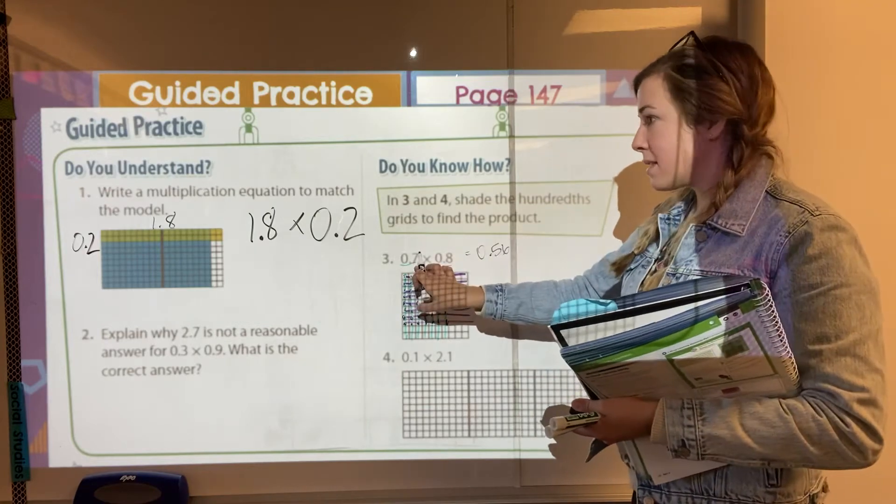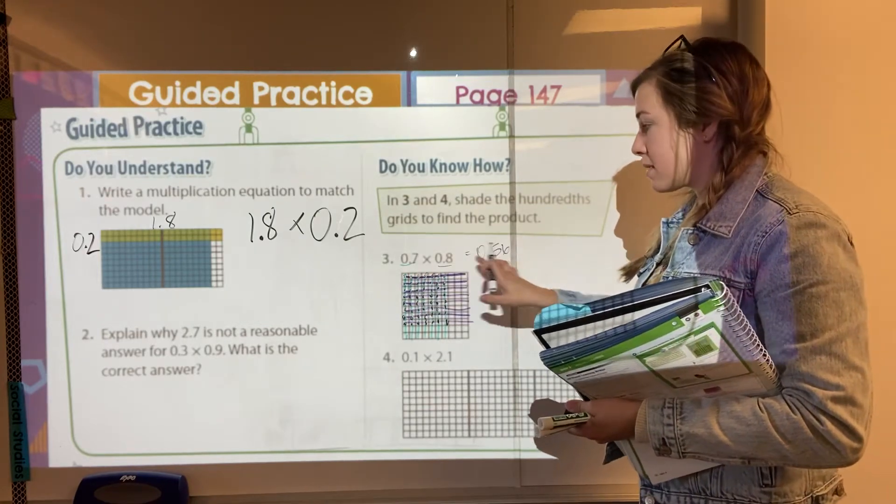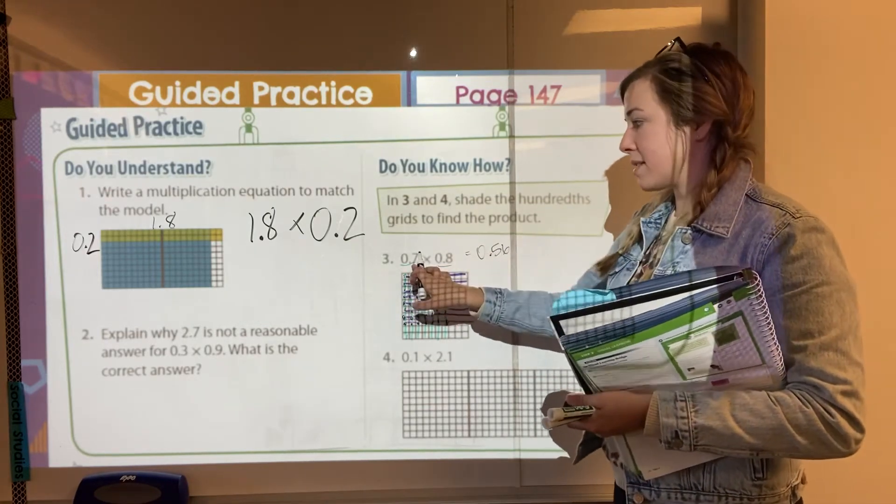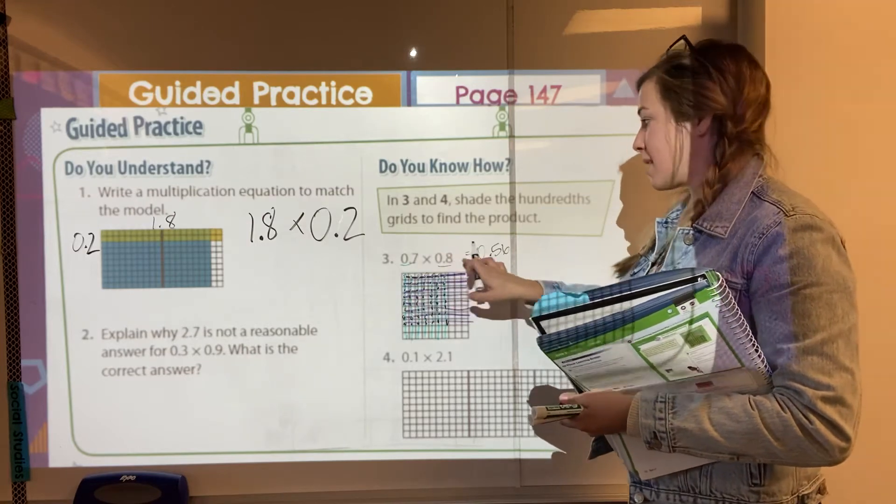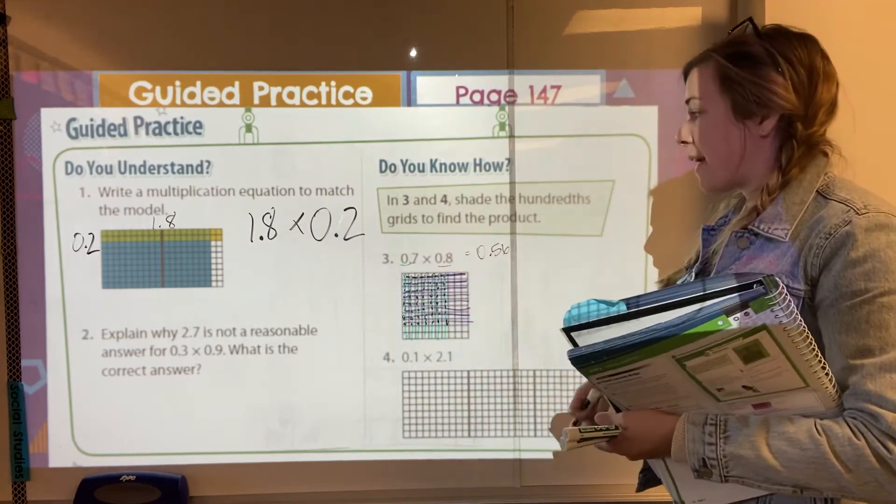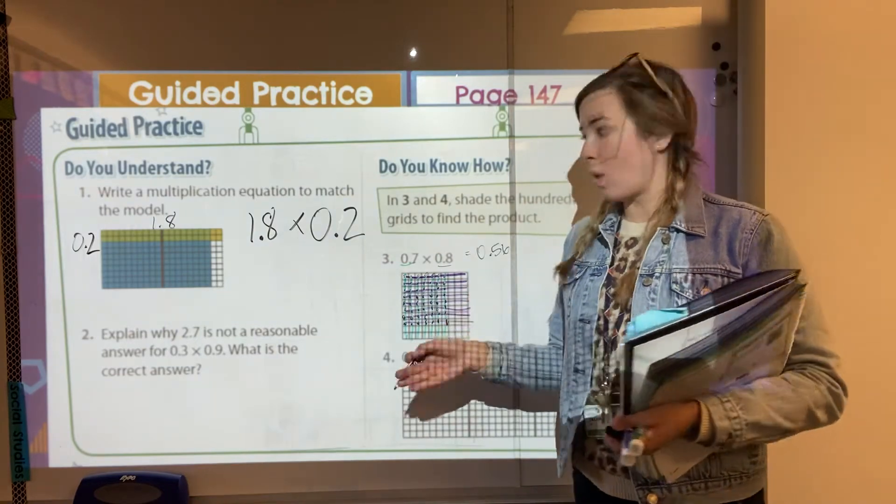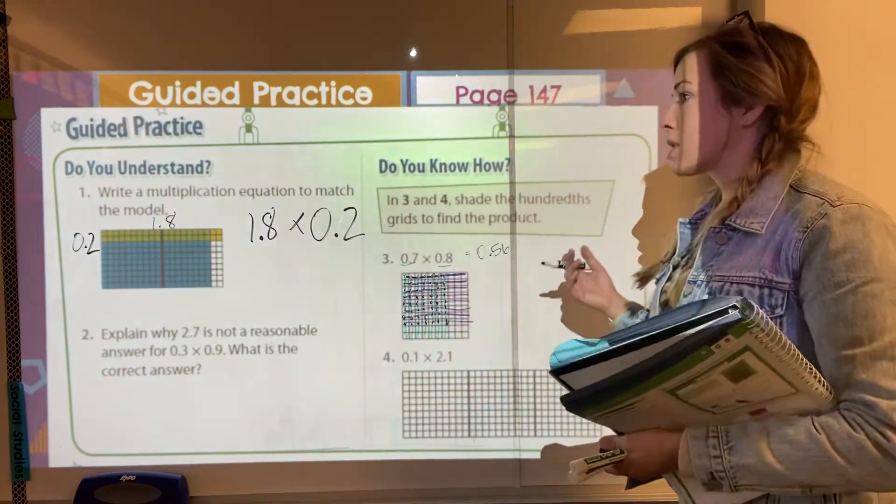And so our answer is actually smaller than both of those. If I look at my seven tenths, well, my answer got smaller because five tenths is less than seven tenths. Same with my eight tenths is greater than the five tenths that we got. So when we multiplied those two decimals that are less than one, our answer got smaller.